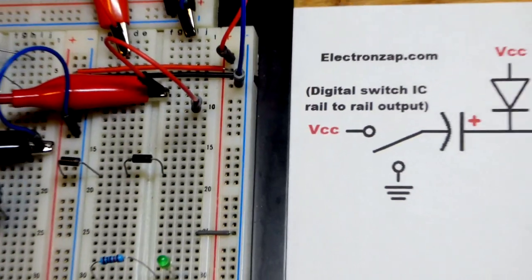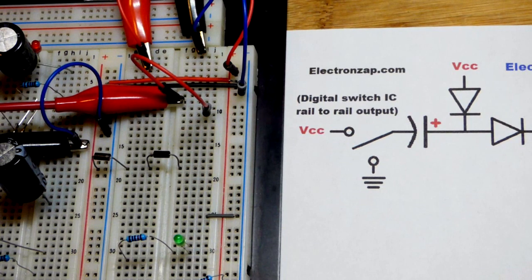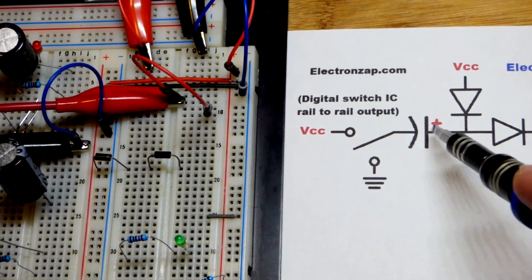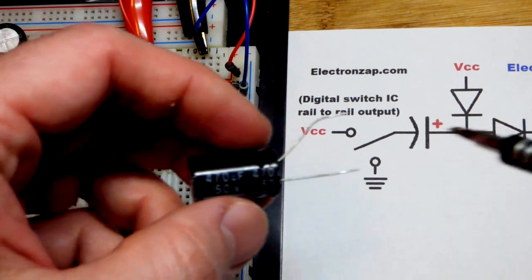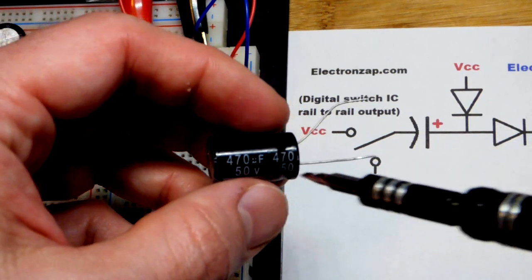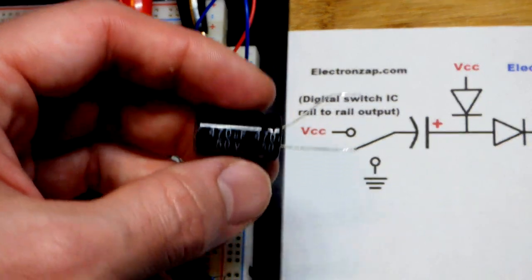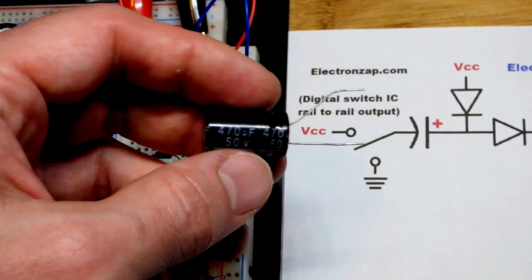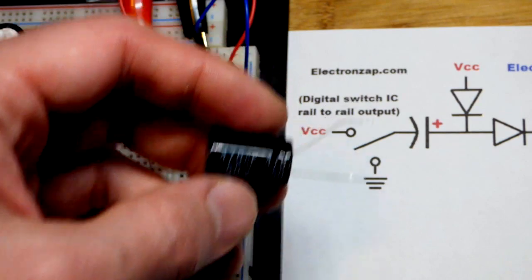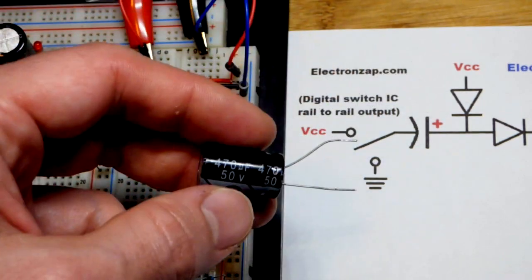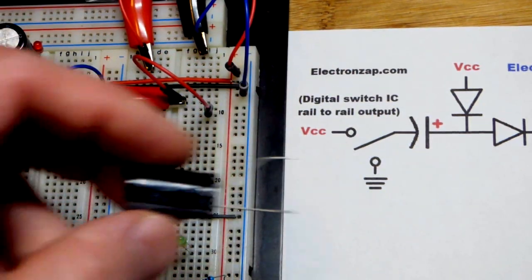Now, the first capacitor. The positive side goes to where those two diodes connect. So we're going to use a 470 microfarad. Value does not matter at all. The larger the value though, the more energy it will store. More charges will fill it up. But it charges instantly when we charge it. We'll look at that later.